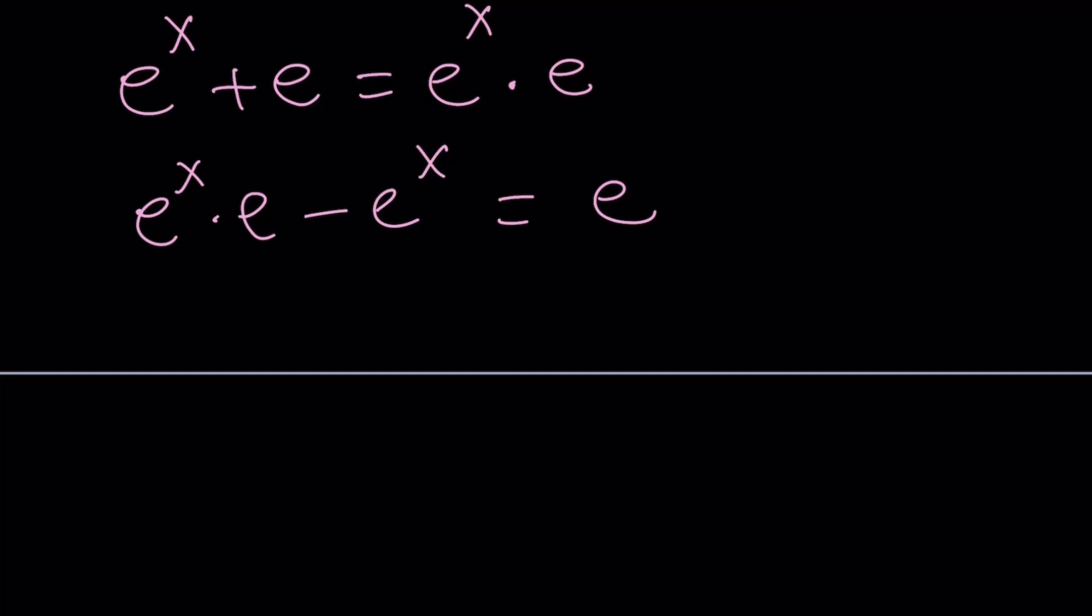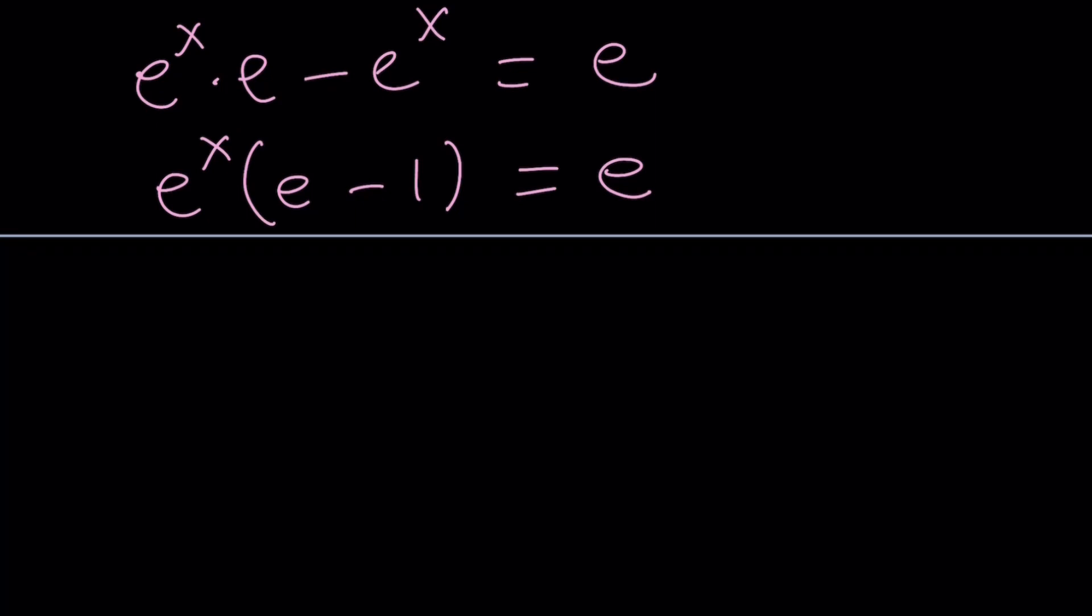We can factor out e to the x. The idea, why do we bring these two together, the x terms? Because we want to be able to factor. You want to put all the x's, all the variables on one side in most cases, and then try to put the numbers on the other side. For that purpose, we're going to divide both sides by e minus 1, whatever e is, just one less than that. And we're going to get this weird fraction, e over e minus 1.